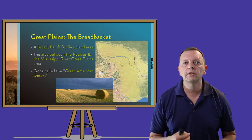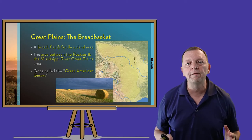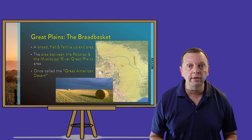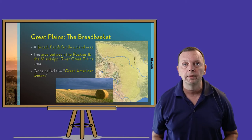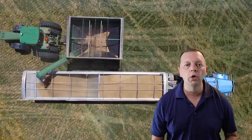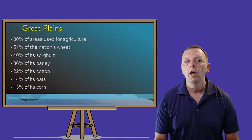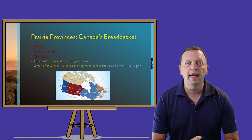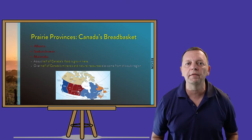As we move further west, in the center of the continent flowing from Texas all the way up to Canada, we find the Great Plains. This is a broad, flat, and fertile area that was once known as the Great American Desert because this area receives less than 20 inches of rain each year. However, this region is one of the world's most important agricultural areas. As 80% of the land area of the Great Plains is used for agriculture, it is known as the nation's breadbasket. Over 50% of the nation's wheat comes from this region, as does a significant portion of sorghum, barley, cotton, and corn. As the Great Plains go into Canada, they become the prairie provinces, which serve as Canada's own breadbasket, growing half of Canada's food.